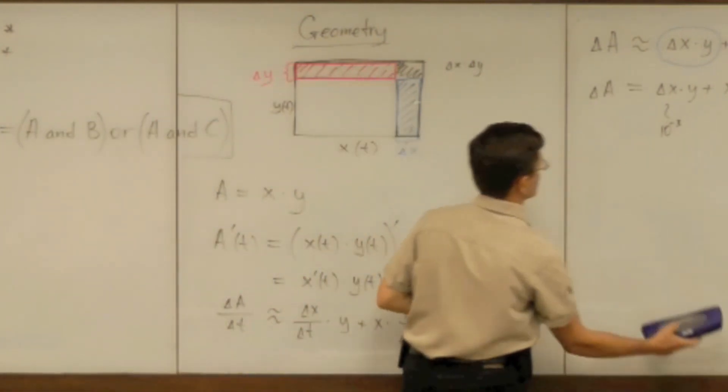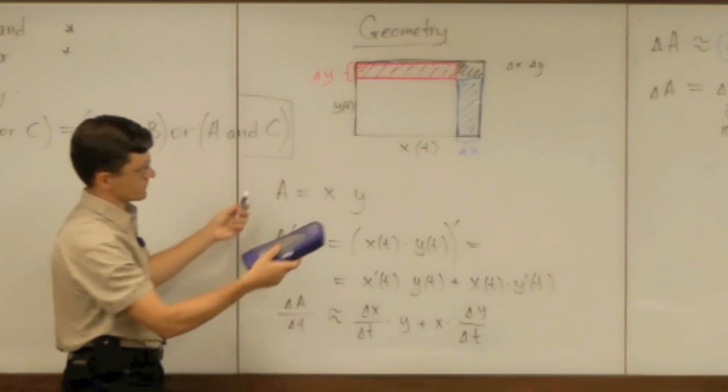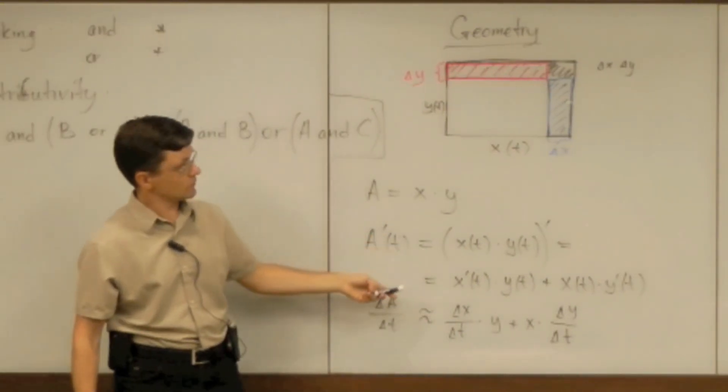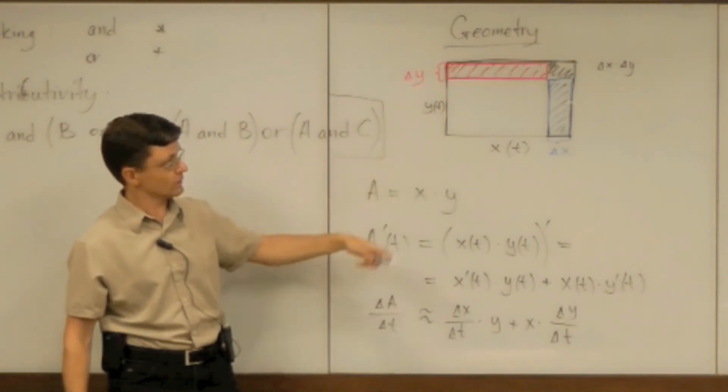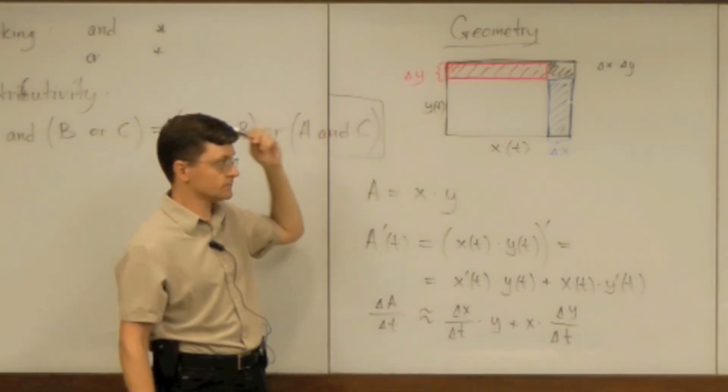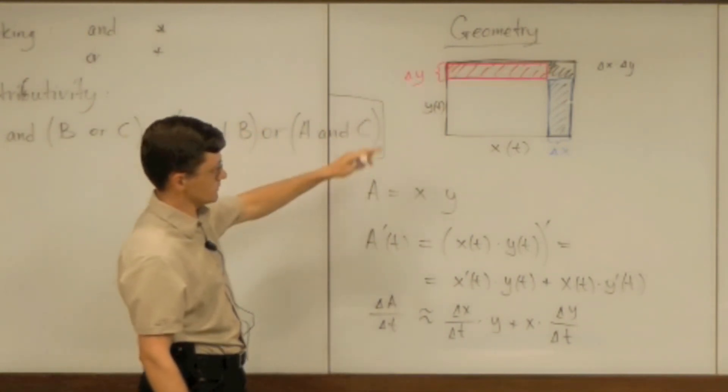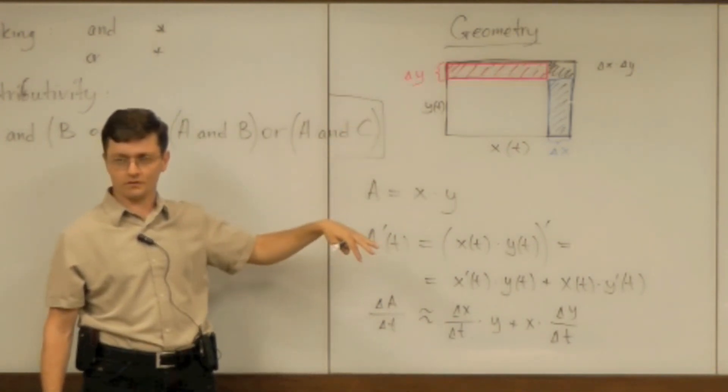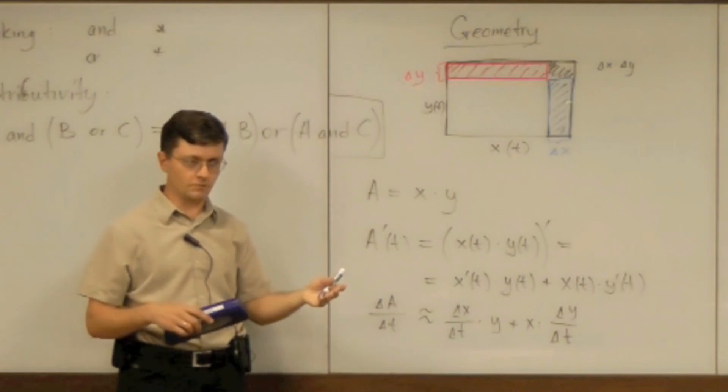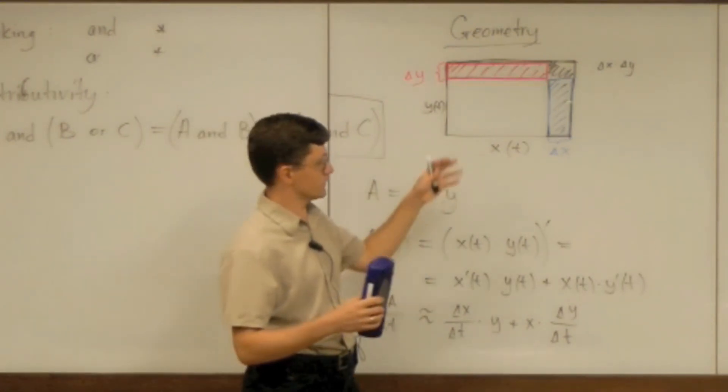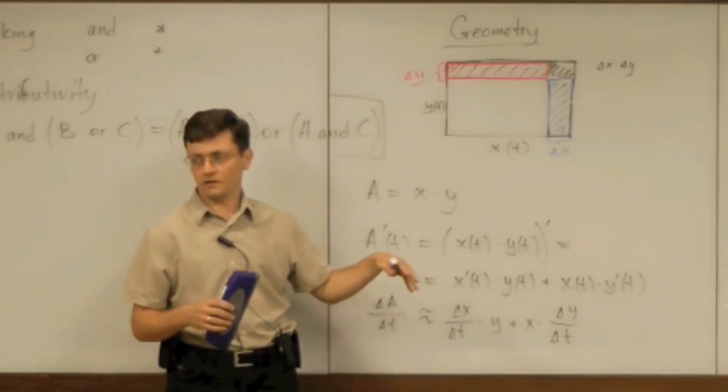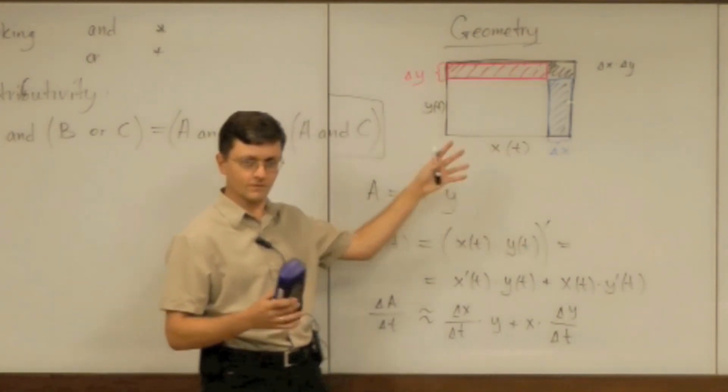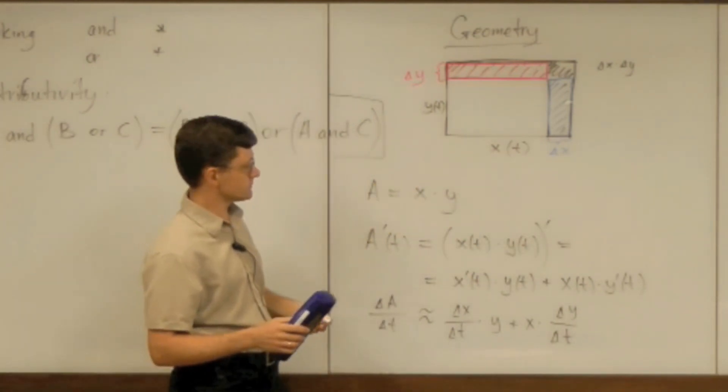Okay so let's go back to distributivity because that was the topic and this product rule was an example. And what I made is a link to geometry. And this is what I will do all the time. I will make links between different problems, between different concepts, between different areas of mathematics and also between mathematics and physics whenever I feel comfortable about it.